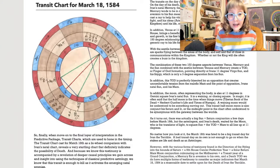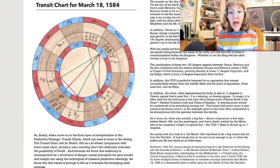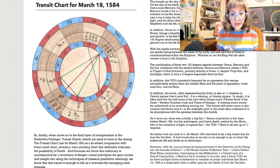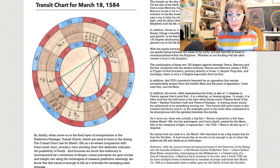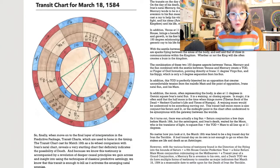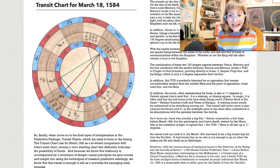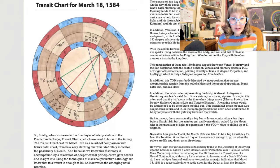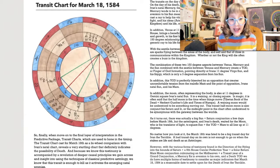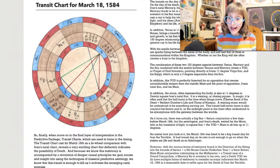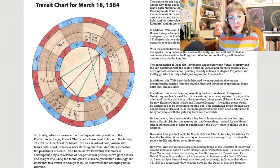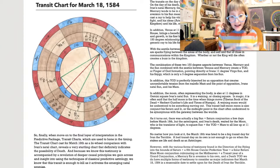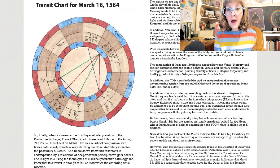Finally, we move on to the final layer of interpretation in the predictive package, which is the transit chart, which is used to hone in the timing. The transit chart cast for March 18th as a bi-wheel comparison with Ivan's natal chart reveals a very startling chart that definitely indicates the possibility of death.